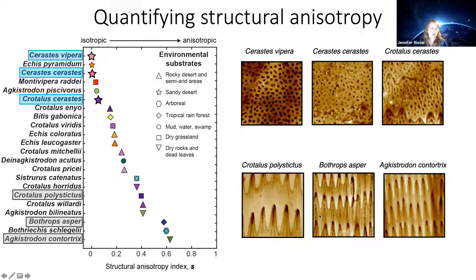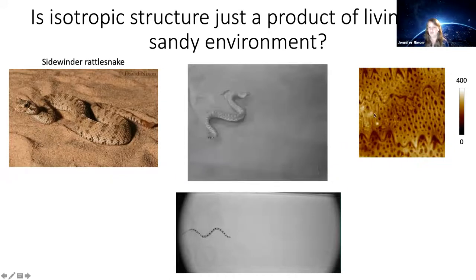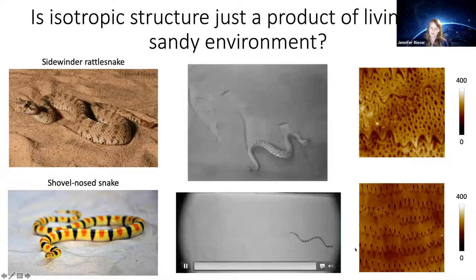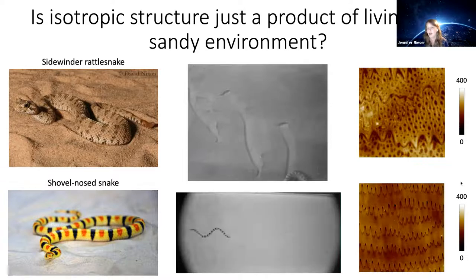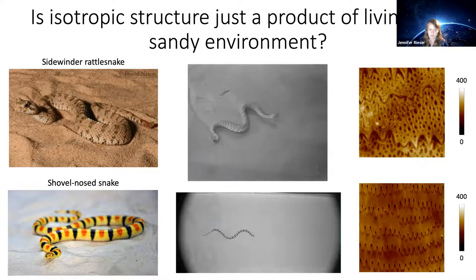One thing you may notice is that animals with low anisotropy seem to inhabit sandy environments more often. But is this just a function of living in a sandy habitat? The shovelnose snake also lives in the Mojave Desert and uses a different form of locomotion, yet it has prominent head-to-tail oriented microscopic spikes. This tells us it's not just the environment — the loss of structure is specifically related to the behavioral change of sidewinding locomotion.